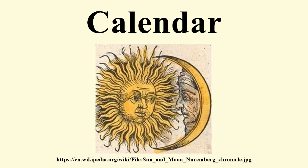The Gregorian calendar is the de facto international standard, and is used almost everywhere in the world for civil purposes. It is a purely solar calendar, with a cycle of leap days in a 400-year cycle designed to keep the duration of the year aligned with the solar year. Each Gregorian year has either 365 or 366 days, amounting to an average Gregorian year of 365.2425 days. It was introduced in 1582 as a refinement to the Julian calendar, amounting to a 0.002% correction in the length of the year.